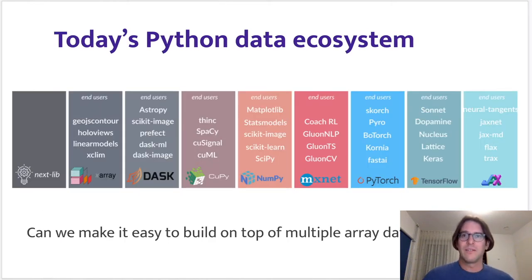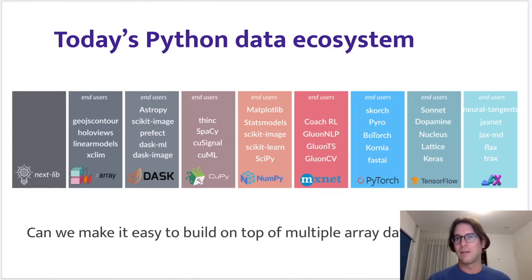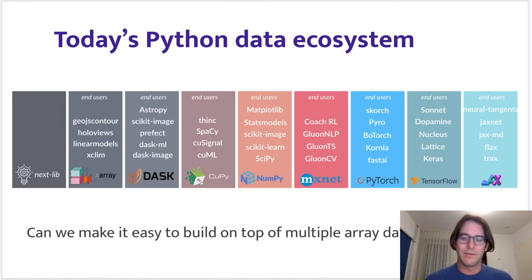The key problem is fragmentation. People are writing packages for only a single array library, and it's sometimes possible to make something work with multiple libraries — for example, people can combine NumPy and Dask. But if you look at many of these packages, SciPy and scikit-learn just work with NumPy, fast.ai just works with PyTorch, Keras just works with TensorFlow, and so on. Everyone builds in their own silo. There's very little reuse of code, and we can't just do what NumPy did 15 years ago — write one new library to bring them all back together. There's too much innovation and everything moves too fast.